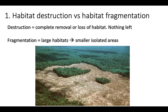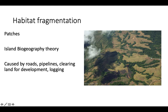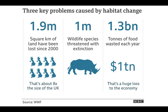Habitat destruction is the first one. To reiterate what we covered in Unit 2, habitat destruction is a complete loss of habitat, whereas habitat fragmentation is breaking a large habitat into smaller patches. We talked about this with island biogeography theory — the creation of patches that organisms have to move between. This could be due to roads or other anthropogenic activities like logging or farms. Some species might be okay living in a patchy environment, some not so much. We've lost 1.9 million square kilometers of habitat since 2000, with over a million wildlife species threatened with extinction, so protecting habitat is crucially important.